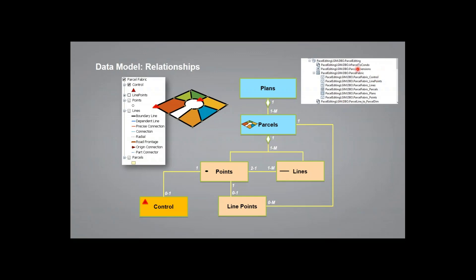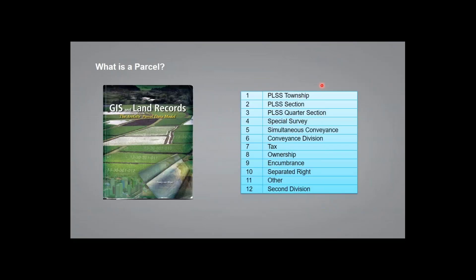Looking at this from the catalog view, you'll notice a feature dataset, within which lives the parcel fabric. Inside the parcel fabric is this exact structure: the plans table, parcels belonging to that plans table, parcels made up of lines, points at the end of lines, some points associated to a control network, and some points becoming line points during editing. This is what it actually looks like from the physical standpoint within catalog. We also need to understand the parcel fabric from the logical — data structure — standpoint.